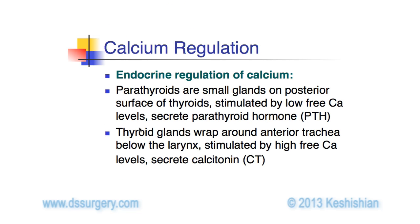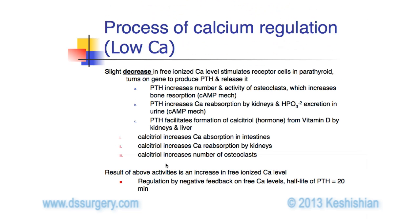Calcium regulation is maintained by parathyroid hormone, as mentioned earlier. There is also another hormone, calcitonin, which regulates opposite to parathyroid hormone. With a low calcium level, parathyroid hormone increases, resulting in a set of physiologic changes — all of which increase absorption of calcium through the intestine, increase calcium resorption from the kidneys, and break down bone to increase the calcium level.